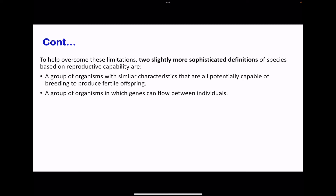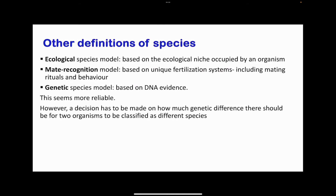To overcome these limitations, two more sophisticated definitions were proposed. First: a group of organisms with similar characteristics that are all potentially capable of breeding to produce fertile offspring — adding the word 'potentially' to indicate the possibility. Second: a group of organisms in which gene flow can occur between individuals. There is also the ecological species model, based on the specific ecological niche occupied by a specific organism, which can be used to classify organisms as belonging to the same species.